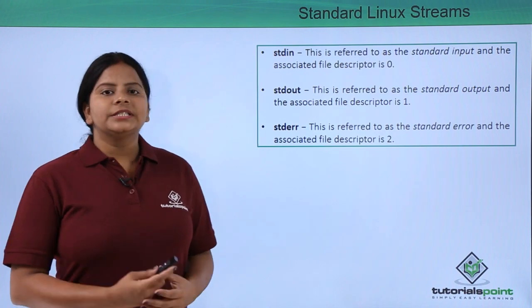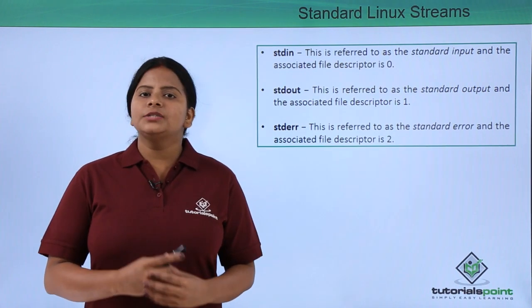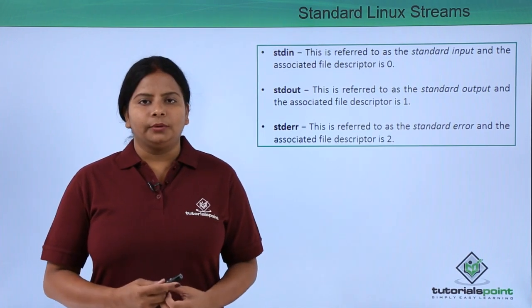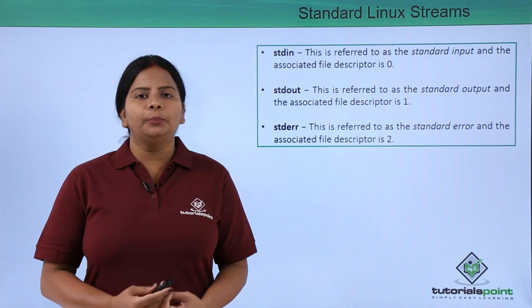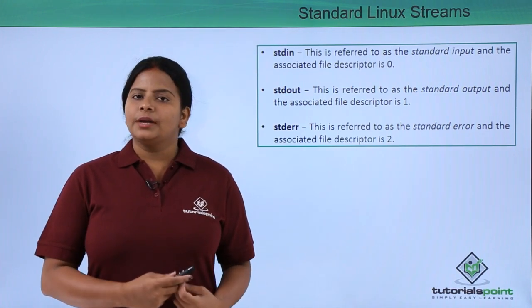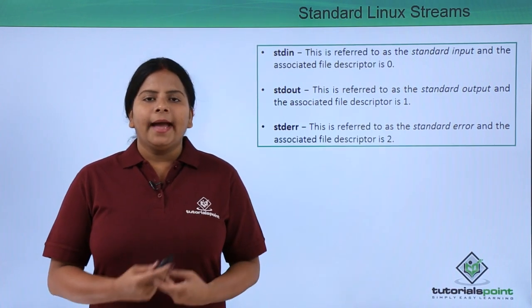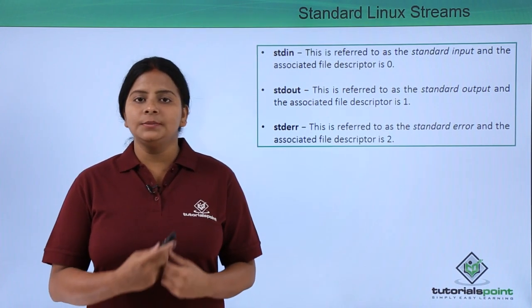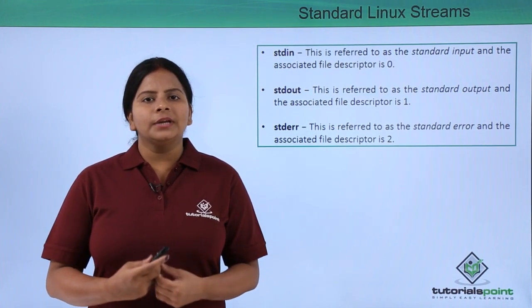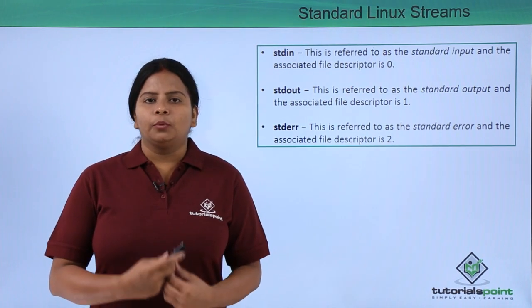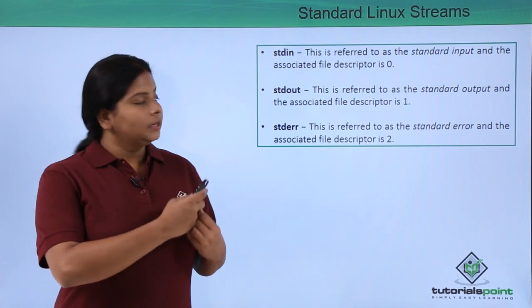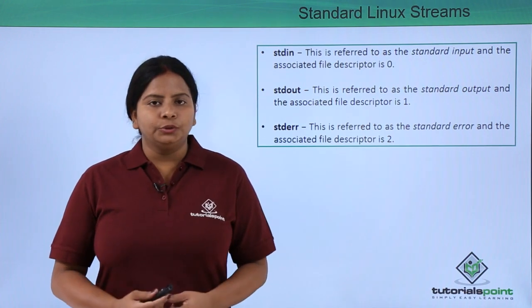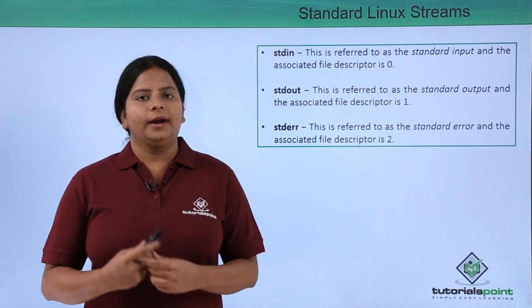We also have stderr, which is for errors. If we run a particular program and there is an error, or if someone has asked for a name and we define a number instead — meaning we are giving the wrong type of data to that variable — it will prompt an error. This error is handled by the method called stderr, which has a file descriptor value of two.